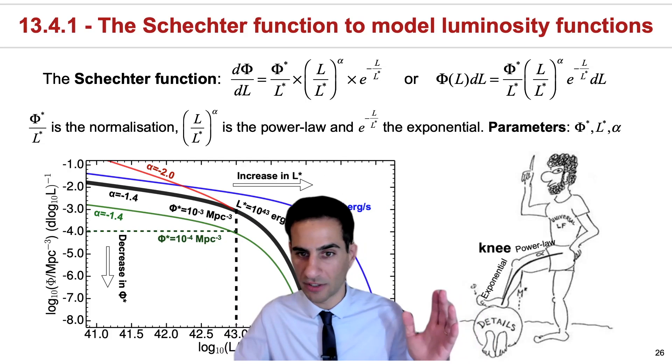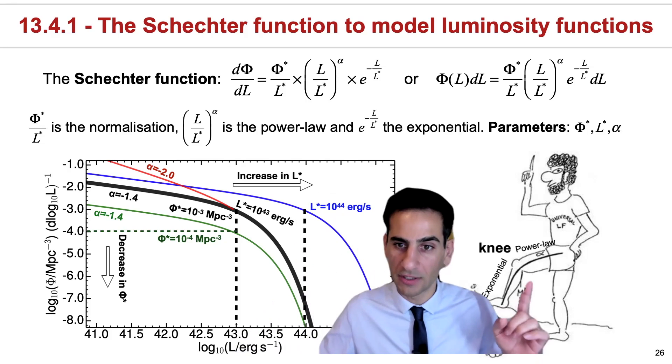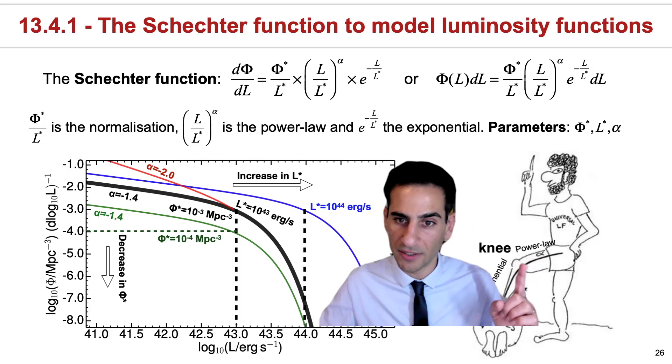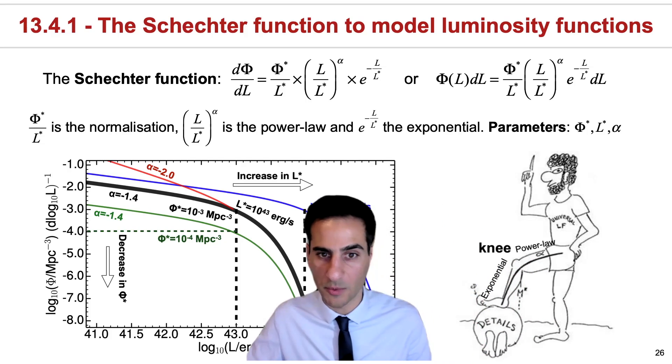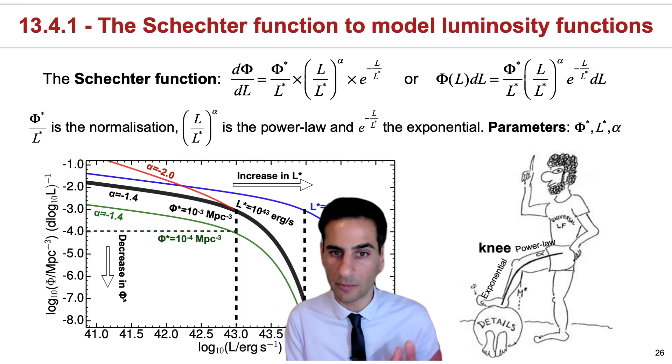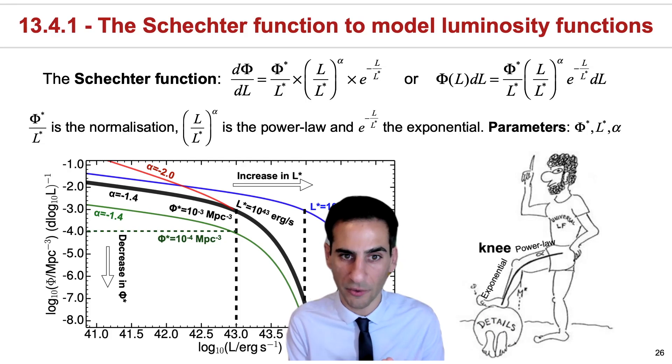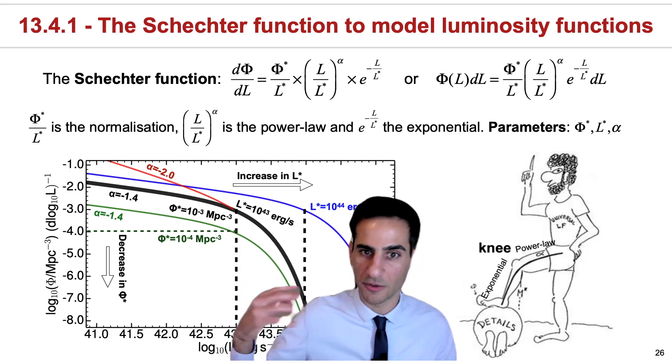This cartoon version of Paul Schechter showing his Schechter function really tries to capture some of the behavior. The fact that this part is basically the power law that depends on alpha, there's the knee, the exponential part. And the problem sometimes with the Schechter function is that even though it models galaxy luminosity functions very well, it actually hides a lot of the details. Therefore, it doesn't really give us a lot of physical understanding unless we can actually match these parameters to physics.